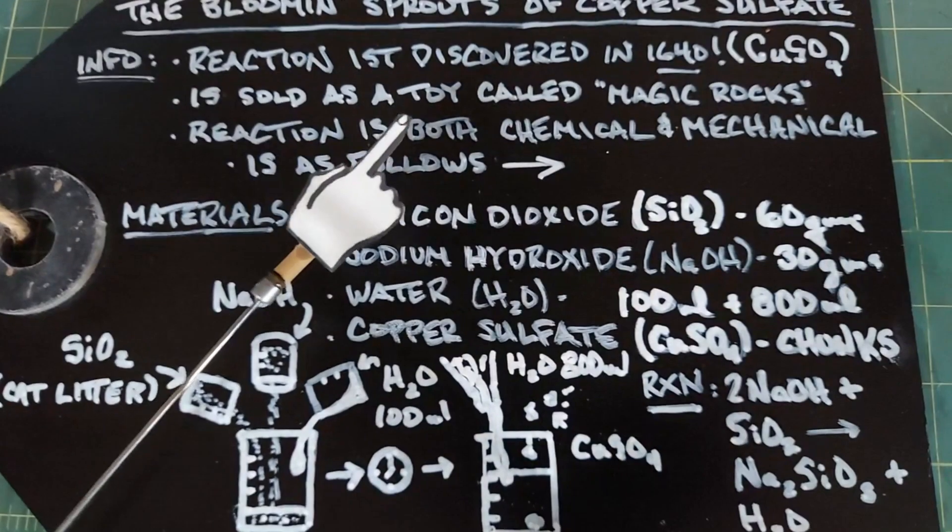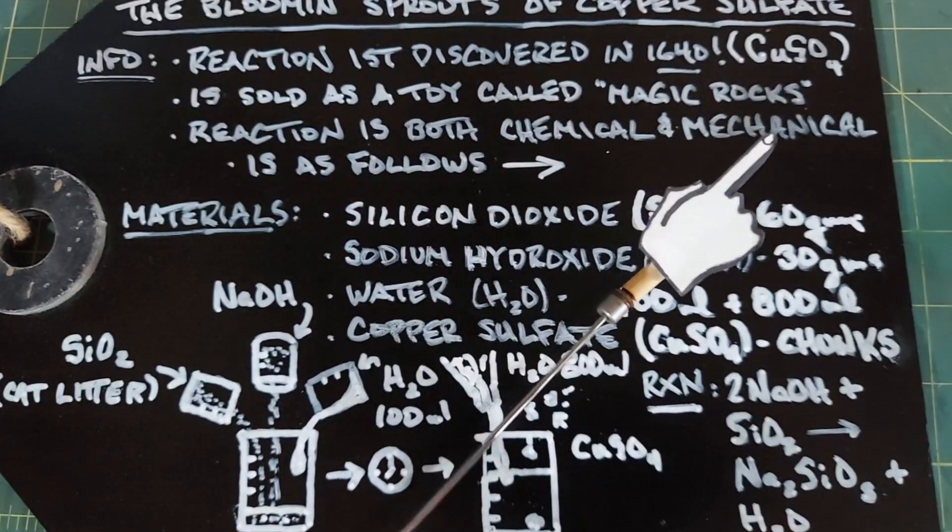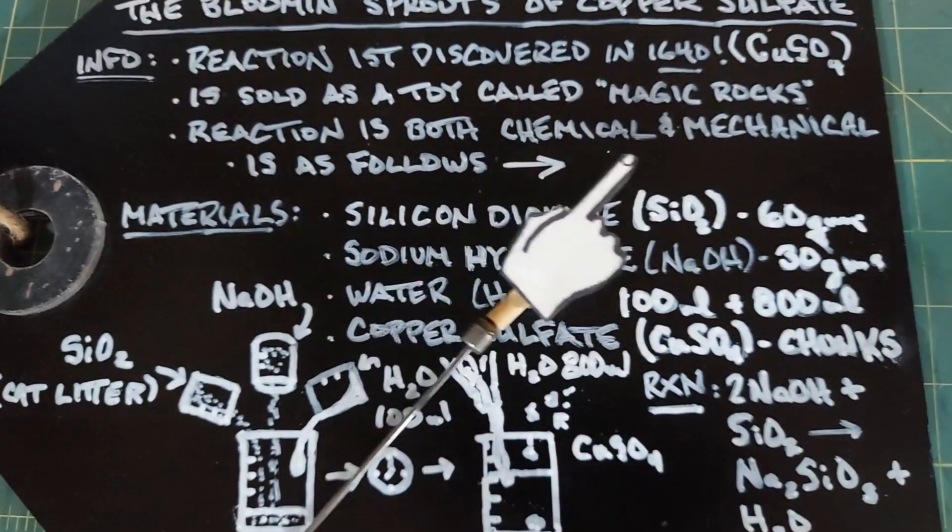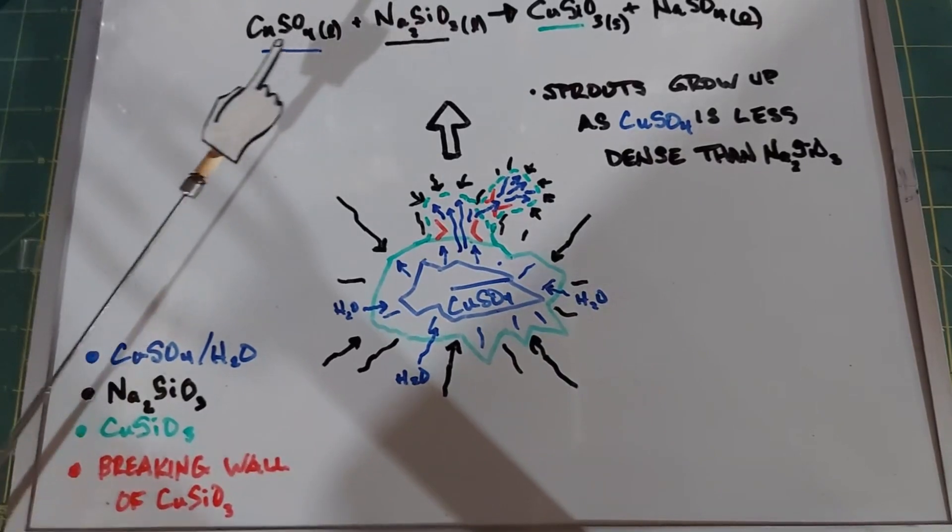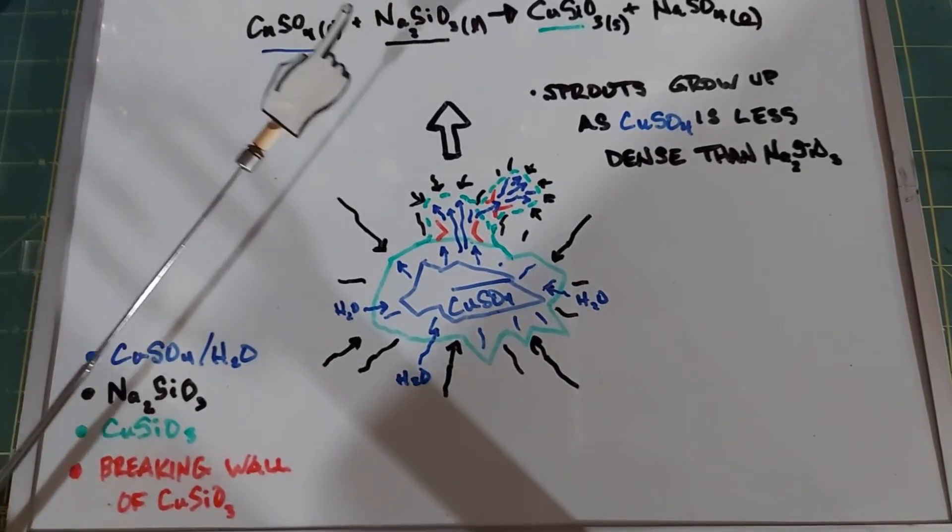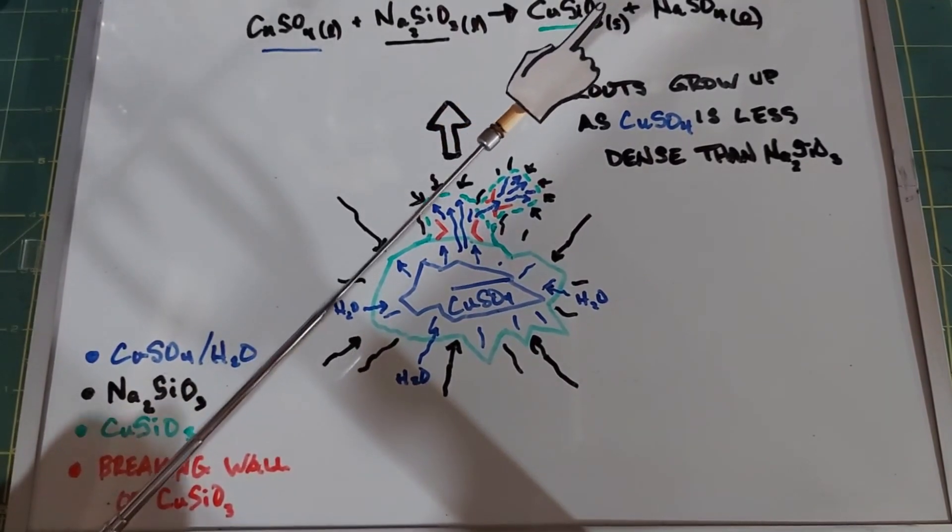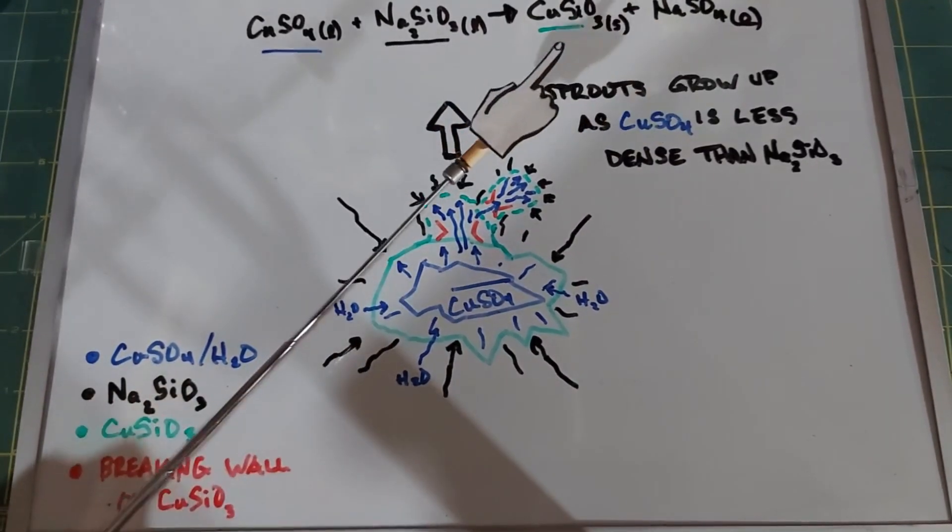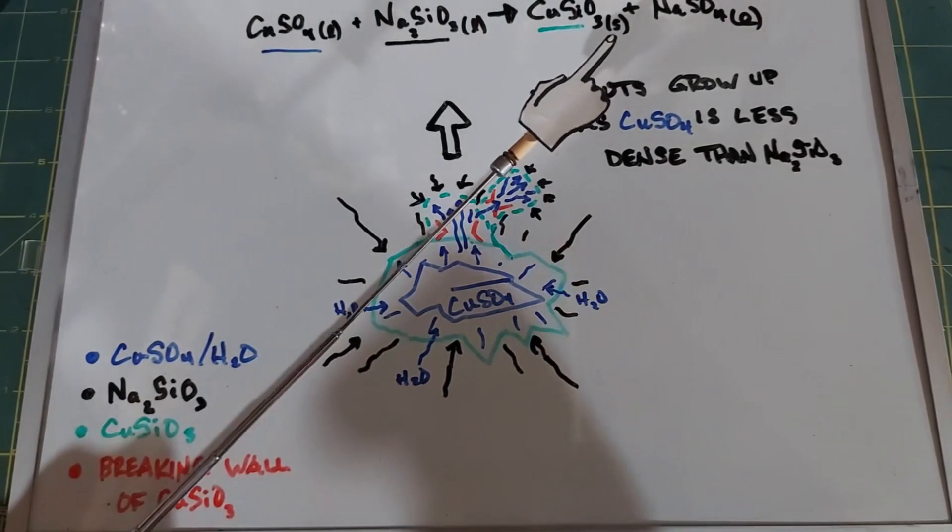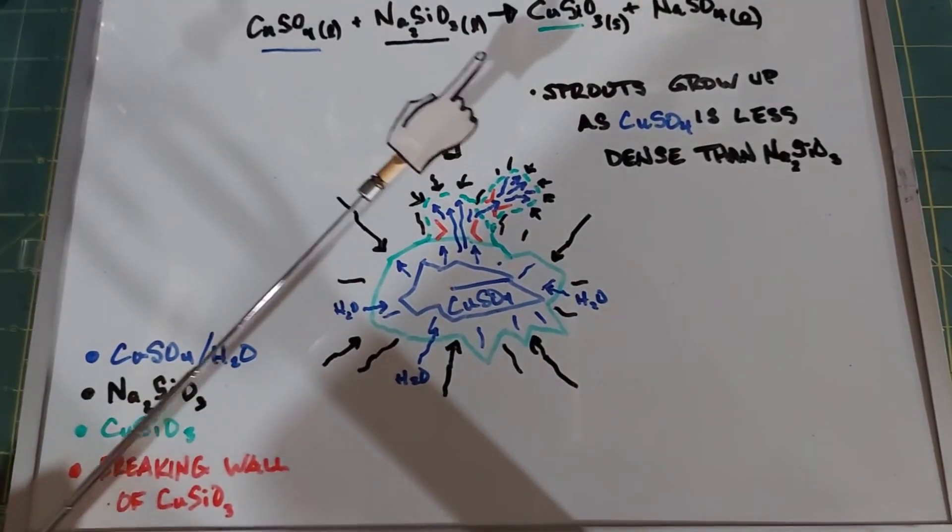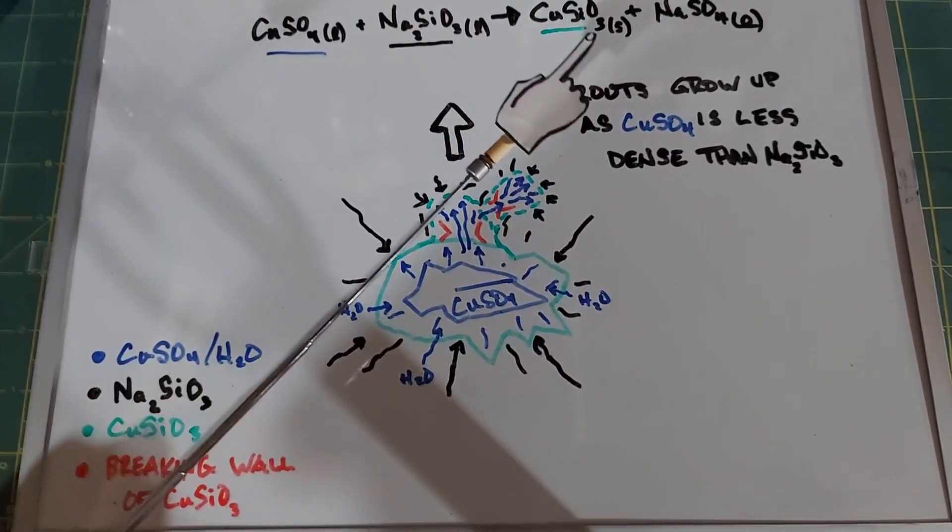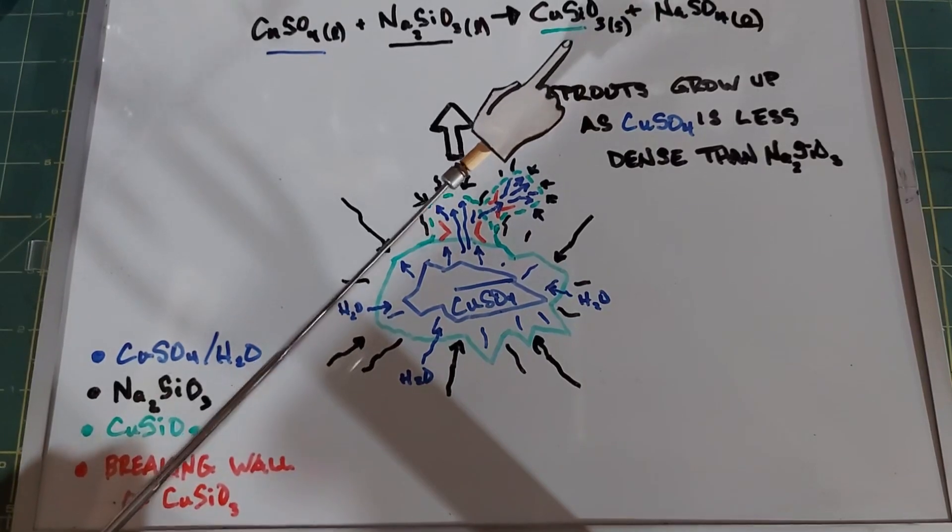This reaction is known as a chemical and mechanical reaction and I'll show you here as follows. First the reaction equation here. The copper sulfate is reacting with sodium silicate yielding copper silicate and sodium sulfate. Copper silicate is a solid that forms within the reaction as it's actually going on. Forming the copper silicate solid is the chemical part of this reaction.